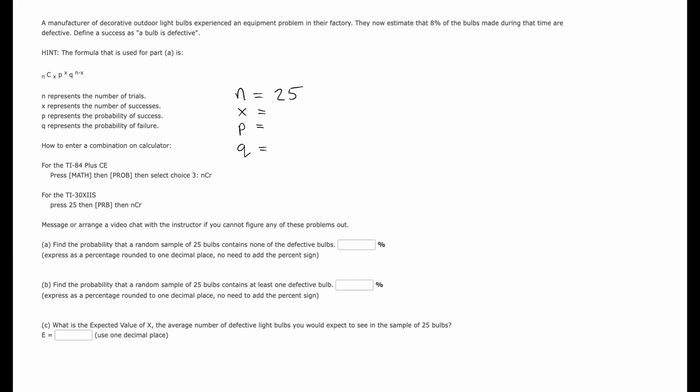Not one, but none. So what would X be? For part A, X is zero because we're looking for none. We want no defective bulbs.